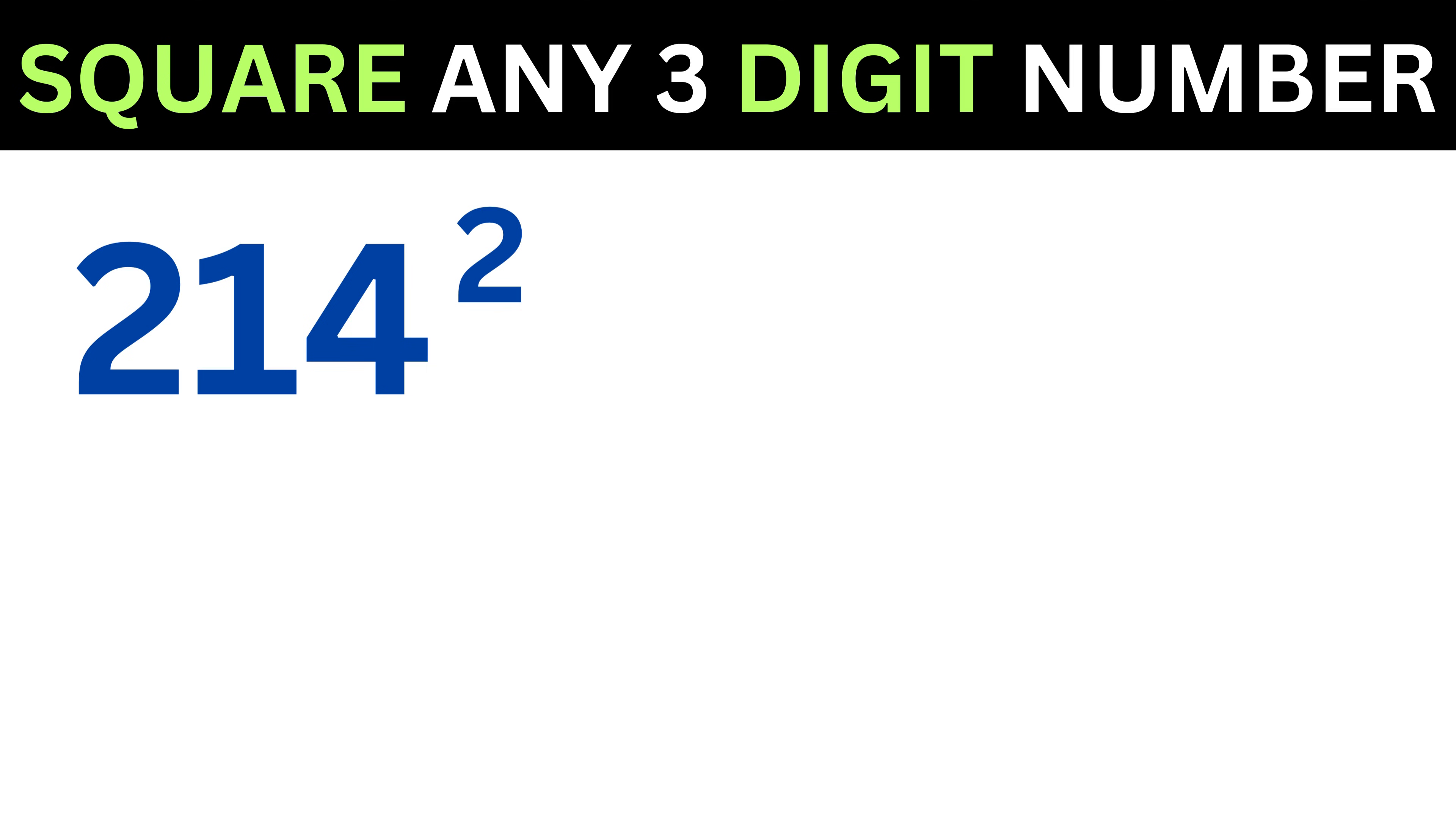Now consider another example, like 214 square. The very first step is to separate this number into two parts, the first digit and the last two digits. Like this, 2 will be the first part, and 14 will be the other part. Then we will divide our answer into three parts.